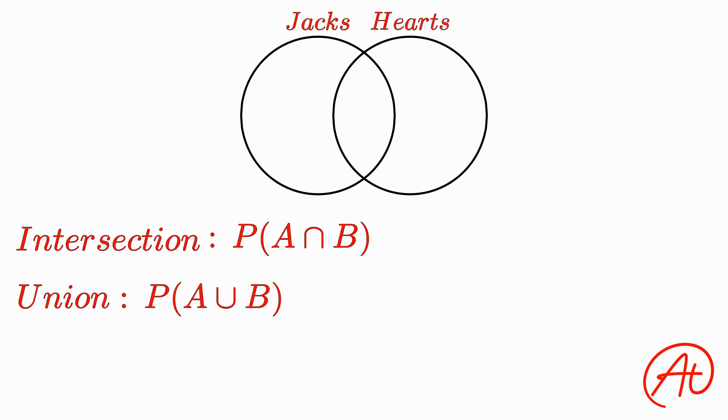For our card example, this would mean that we are trying to find the probability of picking a jack that isn't a heart, a heart that isn't a jack, or even a jack that is also a heart. Essentially any area within the Venn diagram.